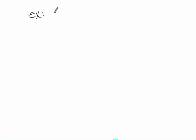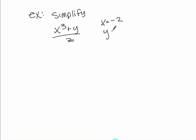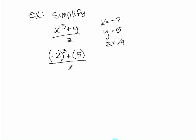The first example is to simplify an expression where x equals negative two, y equals five, and z equals one-fourth. It's a review for some of us, so bear with me. I would start by substituting: negative two cubed plus five for y, divided by one-fourth.